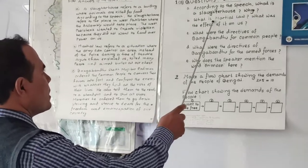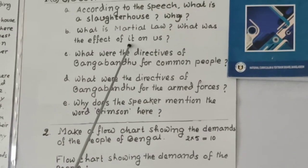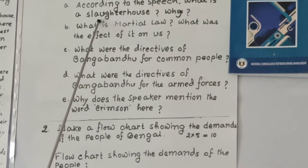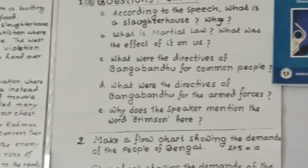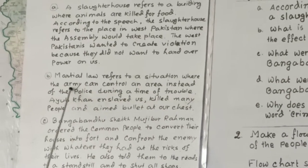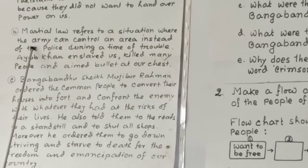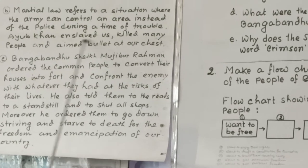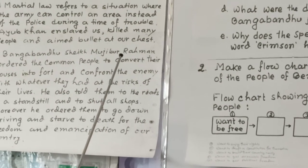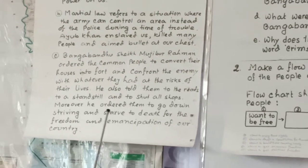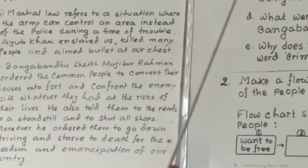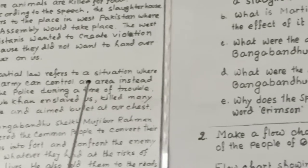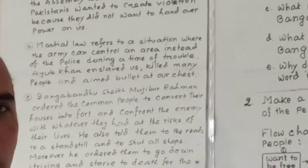For the next question, 'What is martial law?' — again in the present form. The answer: 'Martial law refers to a situation where the army can control an area instead of the police during a time of trouble. Ayub Khan enslaved us, killed many people, and aimed bullets at our chest.' You see, the question is in the present form and the answer also uses 'refers' — in the same tense.